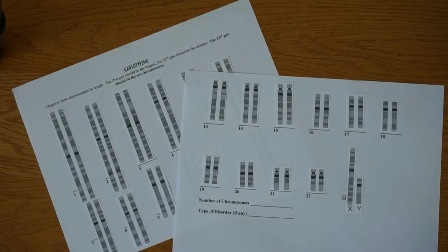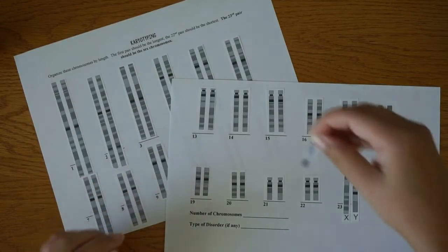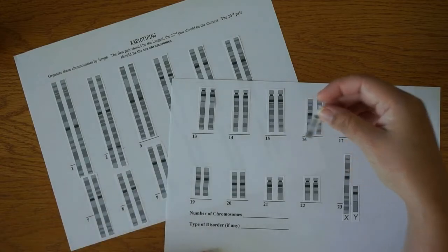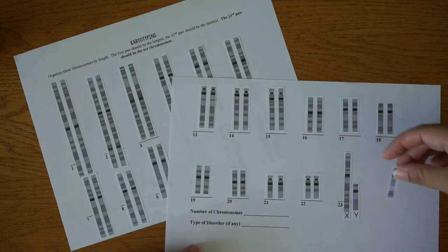Okay, so this is what your sheets should look like when you are done. You should have a pair organized by length and then one extra chromosome. And you need to figure out where that extra chromosome matches.